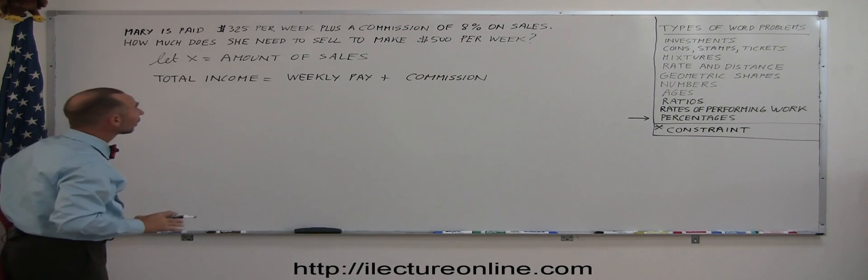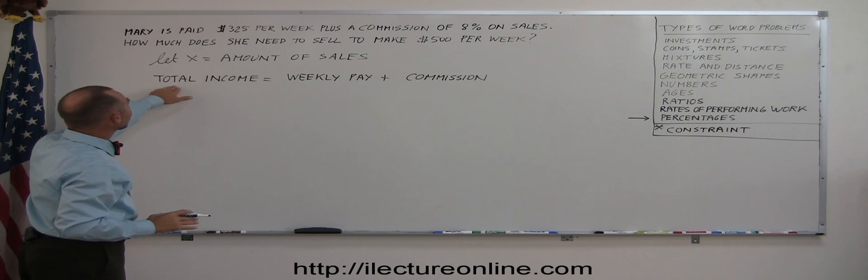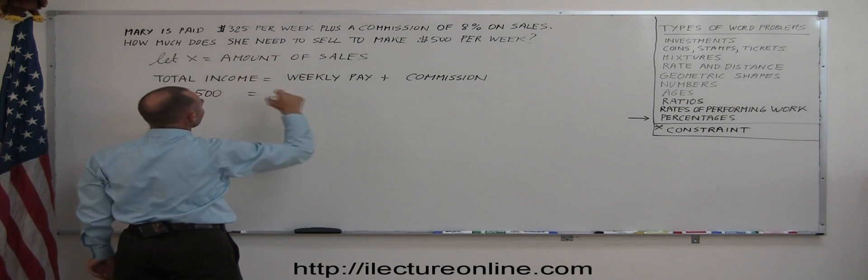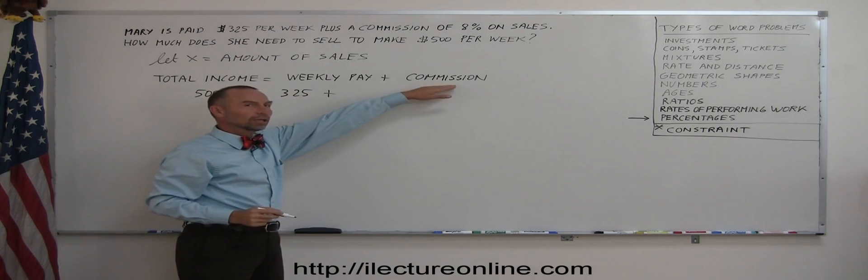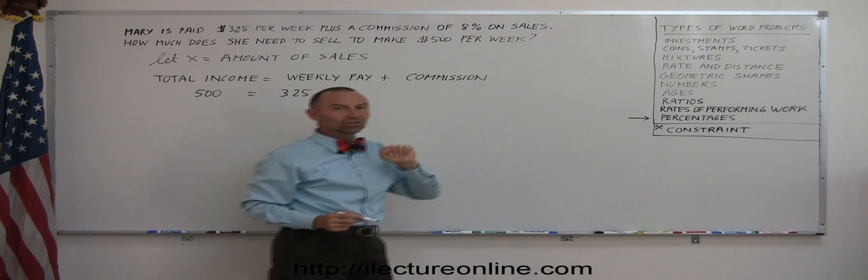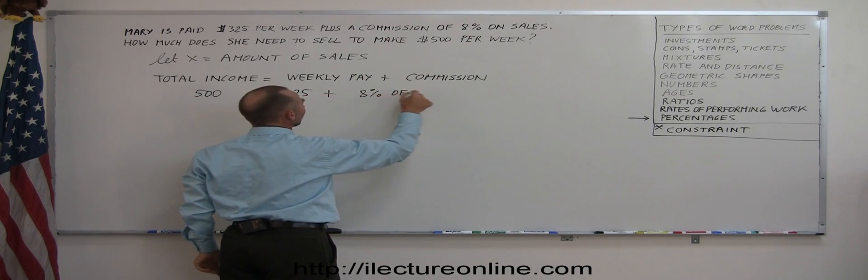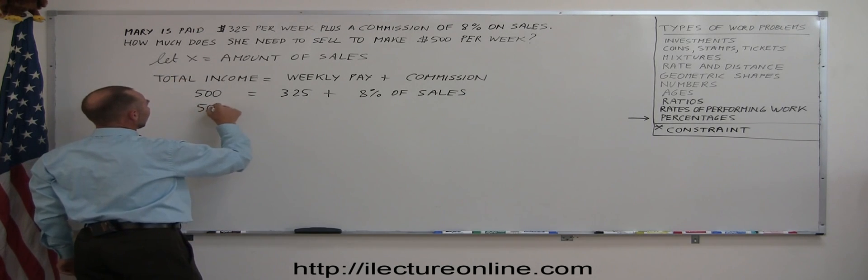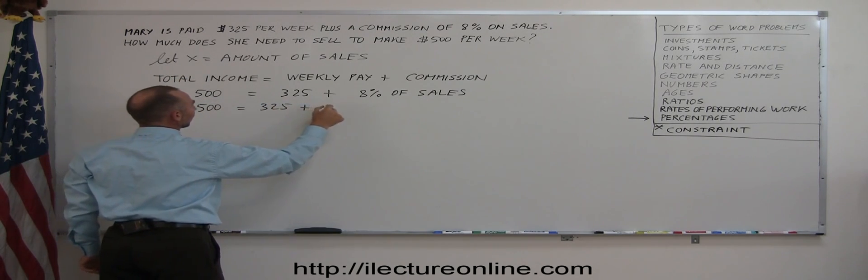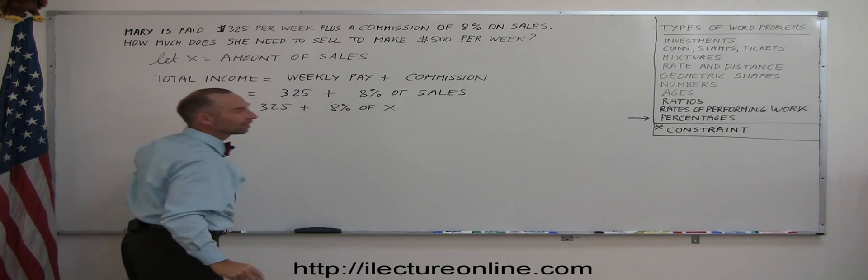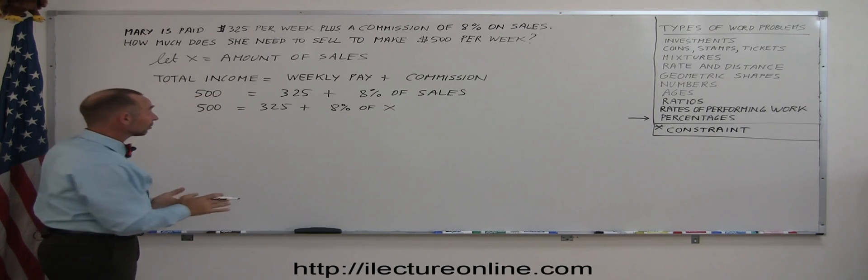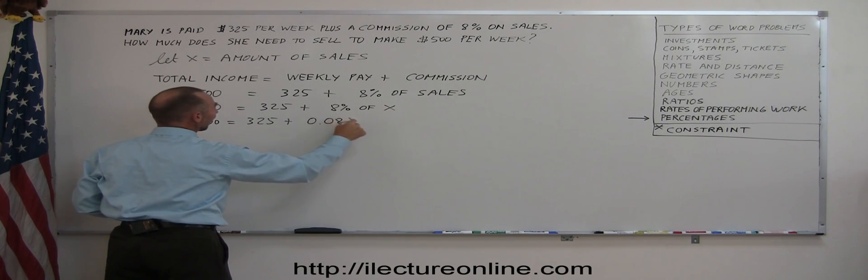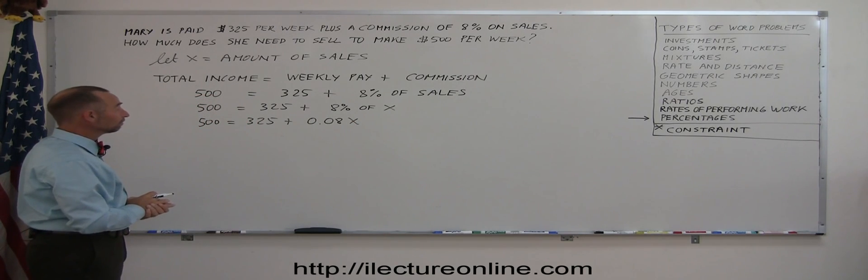Now let's write that in an equation translating the total income. That would be what she wants to earn. So $500 total income equals her weekly pay, straight pay of $325 plus the commission. And the commission she earns 8% on everything she sells. So it would be 8% of sales. We define the amount of sales by X. So now we can write 500 equals 325 plus 8% of X. And of course we don't want to write like that. We want to write it with a decimal. So that means 500 equals 325 plus 0.08X because 8% is the same as 0.08 in decimal.